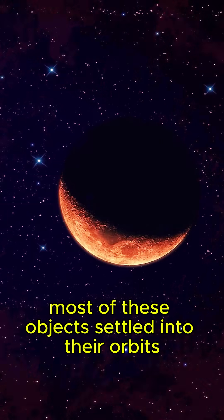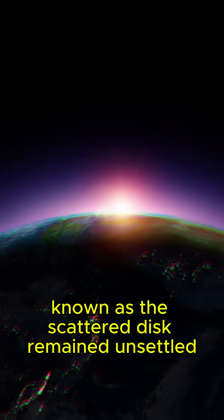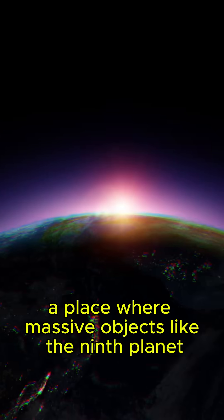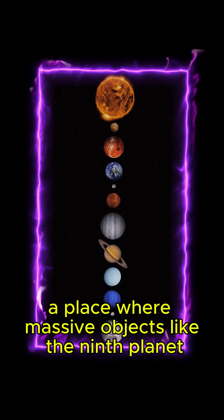Most of these objects settled into their orbits, but one distant region, known as the scattered disk, remained unsettled, a place where massive objects like the ninth planet could form.